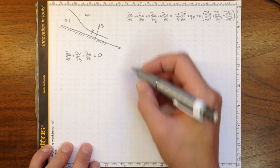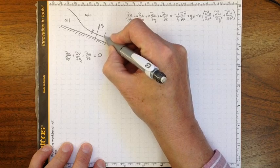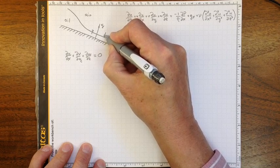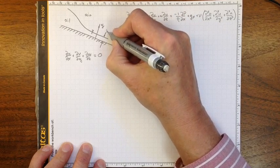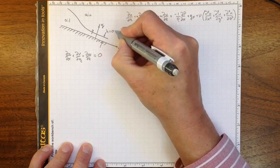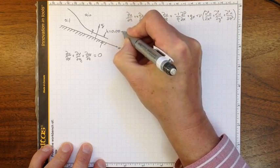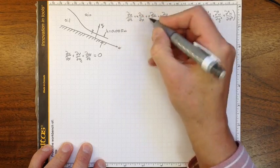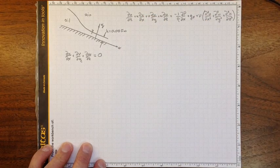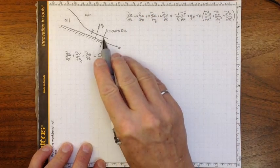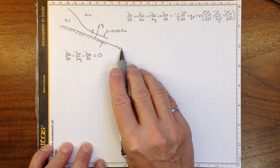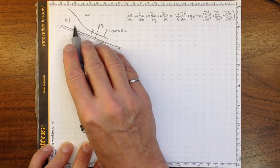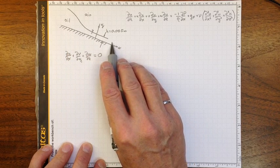Suppose we measure this thickness here and figure out that height is 0.005 meters, i.e. 5 millimeters. So we've measured that thickness. We'd like to know how much oil is flowing off the end here. The first thing we need to know is what does the velocity of the oil look like?